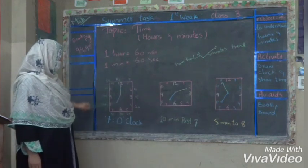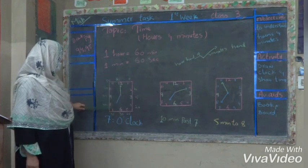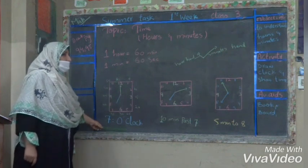Now, you can see this one's clock. Here the big needle is on 12 and the small needle is on 7. It means there is exactly 7 o'clock.